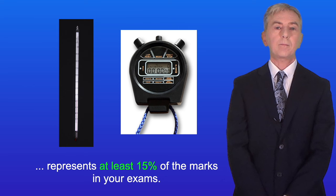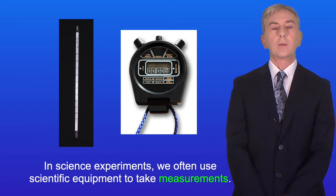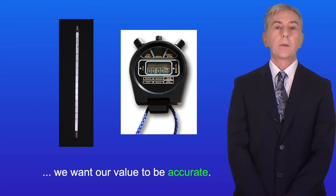Now in science experiments we often use scientific equipment to take measurements. Whenever we measure anything in science we want our value to be accurate. An accurate measurement is one that's close to the true value.